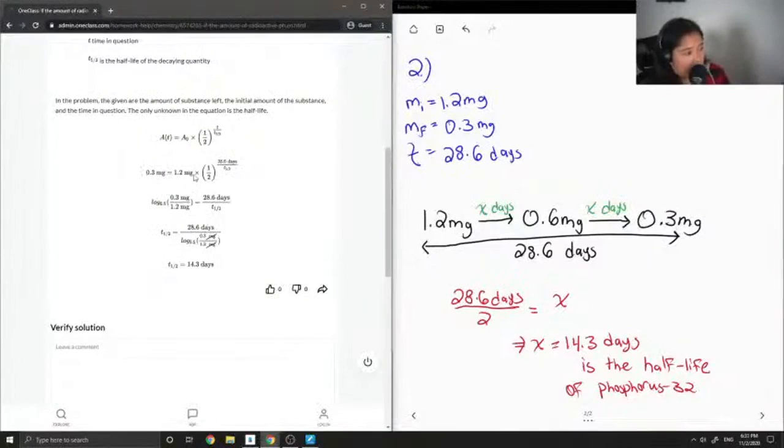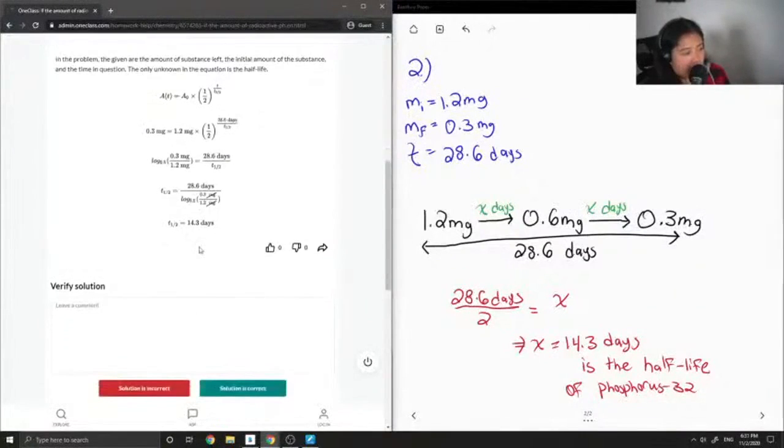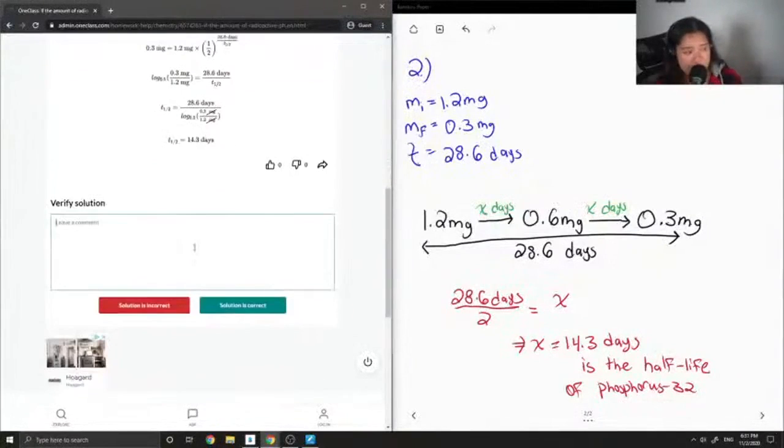So if you simplify and try to solve for the unknown, you end up with t half equals 14.3 days. And we know that this is also what we got, so we can confirm that this solution is correct.